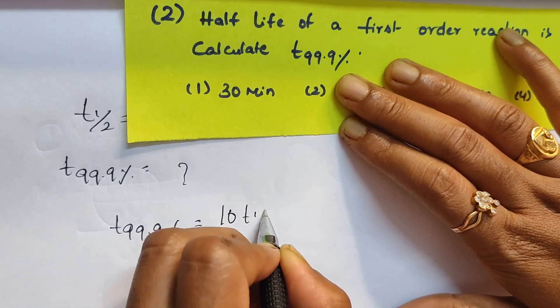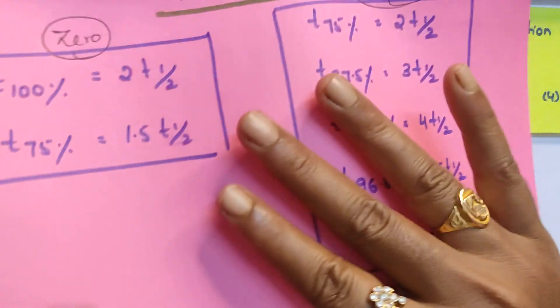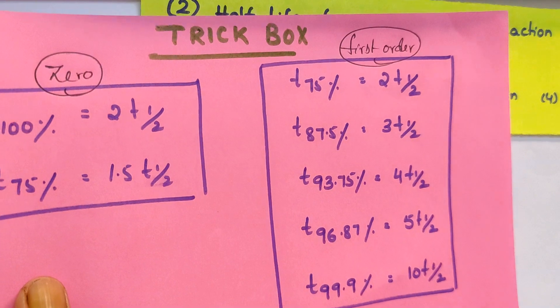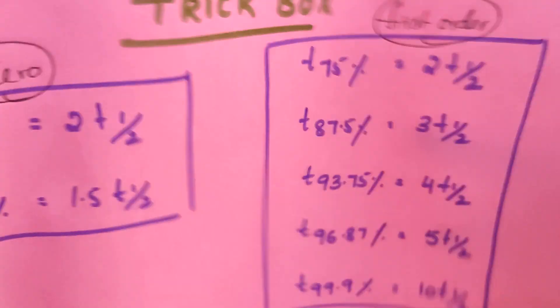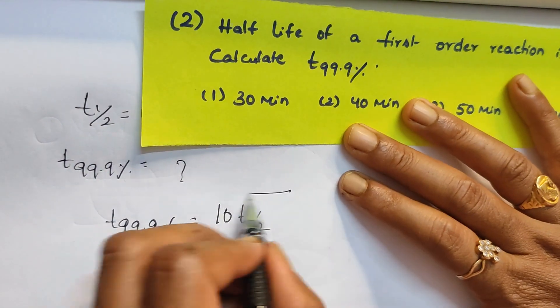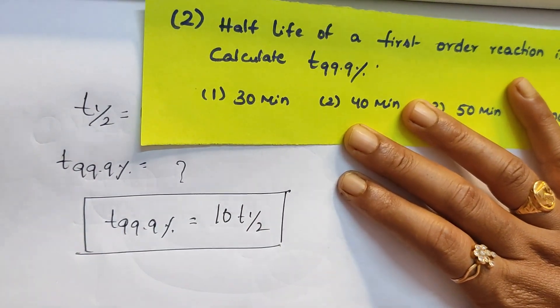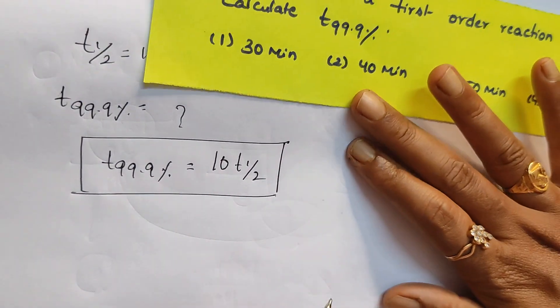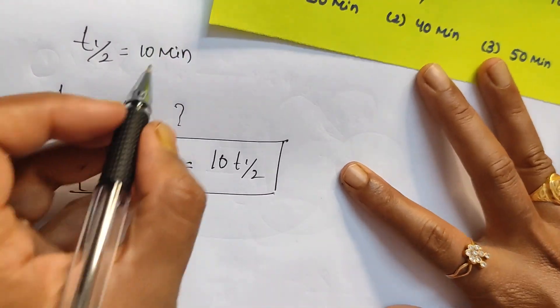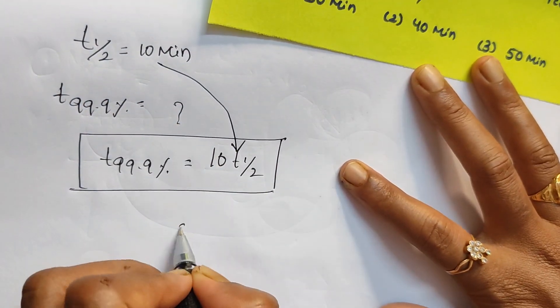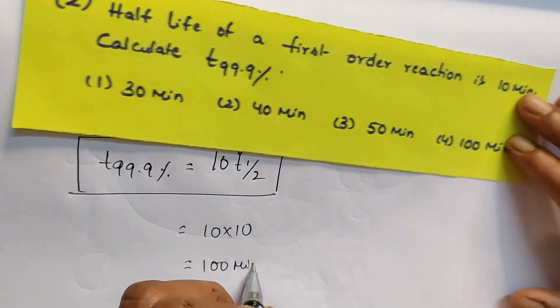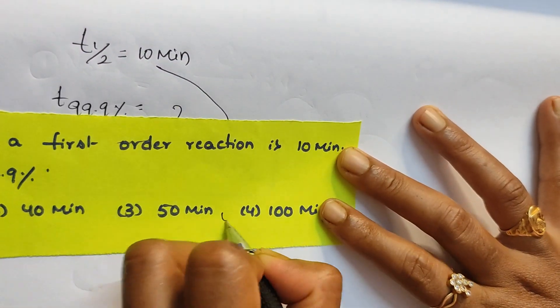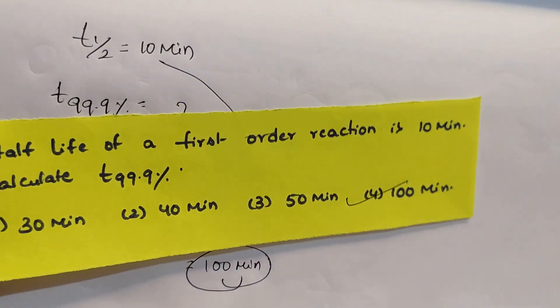What is the relation? t 99.9 percentage is equal to 10 t half, as I taught you in a formula. If you remember these formulas, no need to substitute, you can save your time. If you can't remember the formulas, then utilize the formula which I taught to substitute it directly. Substitute t half here: 10 into 10 which is equal to 100 minutes is your answer. So fourth option is the correct answer.